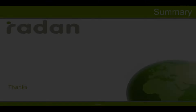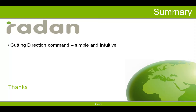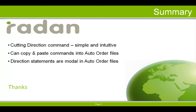In summary, we've seen that the cutting direction command dialog is a simple and intuitive way to add a direction statement to a nest's current order text. Once the direction command statement is verified to provide the required control, it can easily be copied into an auto order file for use with future nests. Don't forget that any direction command encountered within an auto order file stays active or modal for all other tool definitions throughout the rest of the auto order file until another direction command is encountered. Thanks for watching this tech video and stay tuned for more videos from the Radan Resource Newsletter.